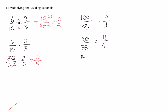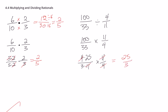So that would be 4 times 25 on the top, and on the bottom 33 would be the same thing as 3 times 11. So now when we multiply 11 over 4, you can see we can cancel out an 11 on top and bottom and a 4 on top and bottom. So our final answer is 25 over 3. That gives you an idea of how we did it with regular fractions.